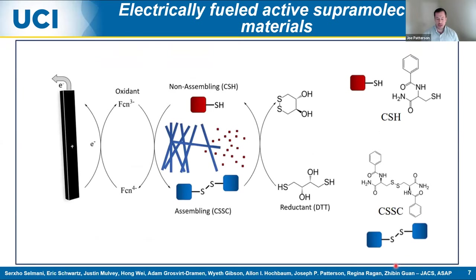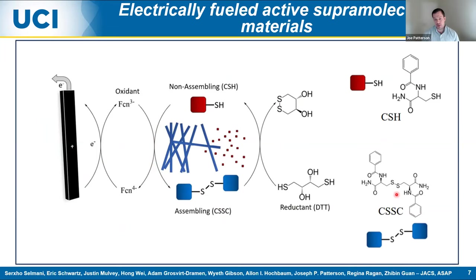The system I'll talk about today was developed by my colleague Zibin Guan, a member of the NSF MERSEC. Zibin developed the first electrically fueled active material system. Previously, people used chemical fuels and light; Zibin developed a system using electricity. The electrode controls an iodine-redox couple, which does the activation reaction. We have a cysteine thiol molecule - the non-active building block - that undergoes a reaction to form the disulfide dimer CSSC, the cysteine disulfide molecule, which is capable of forming a hydrogel by assembling into fibers. Simultaneously, DTT in solution acts as a reductant to deactivate the system and reform the inactive monomer. This cycle is really key to these active materials.